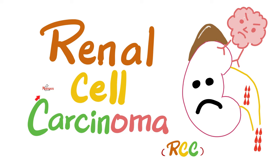In previous videos, we talked about nephritic syndrome, when I'm losing blood in the urine. We talked about nephrotic syndrome, when I'm losing proteins in the urine. We talked about acute kidney failure and chronic kidney failure, both of which will give me azotemia. Azot means nitrogen — blood urea nitrogen — because you cannot survive only on nitrogen; you need oxygen. We also talked about kidney infections like pyelonephritis.